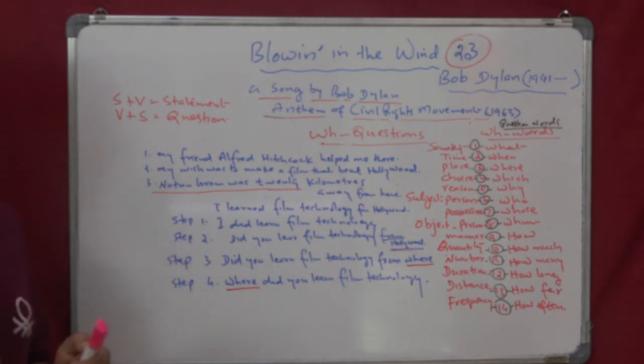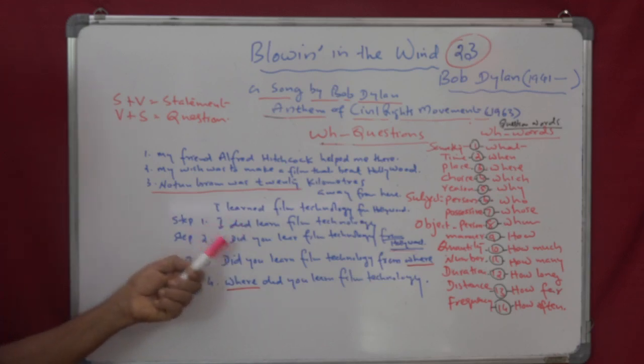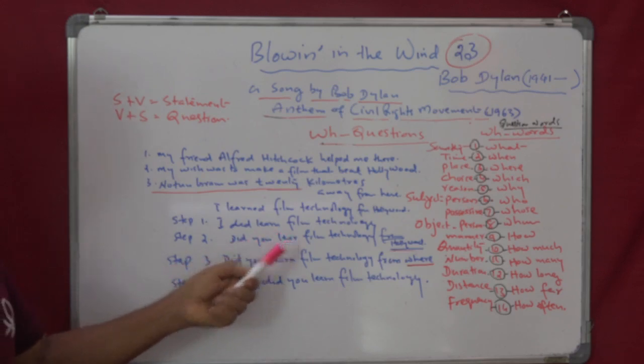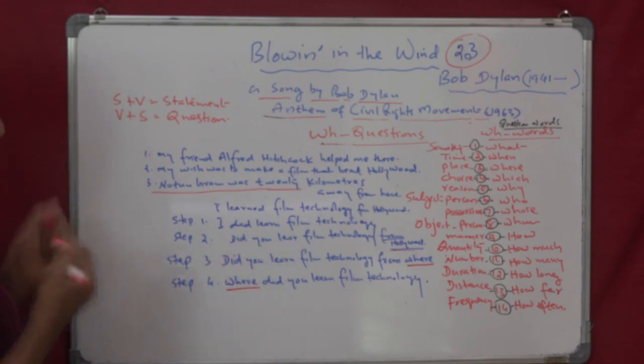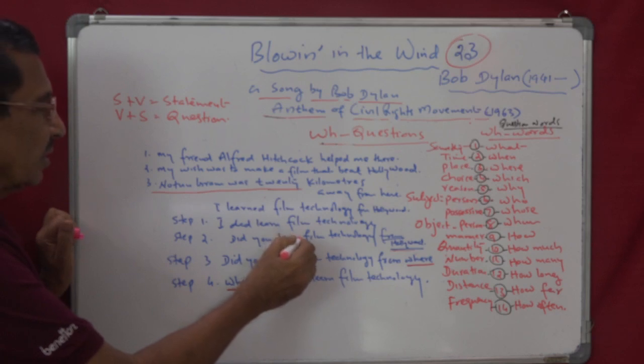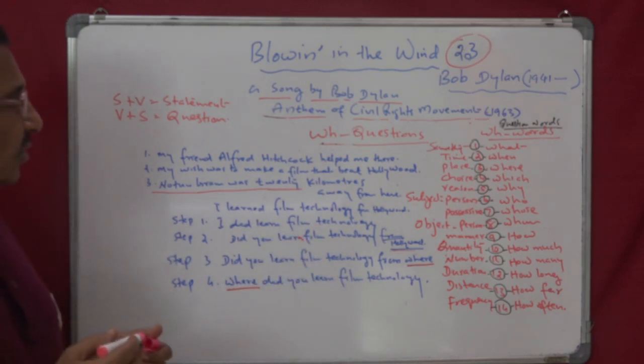Step 2 is, you make a frame and yes or no question. So, that is, did I will become did you. Did you learn film technology from Hollywood?